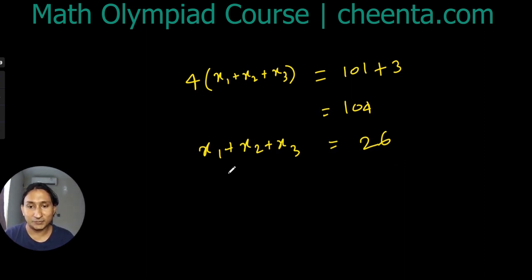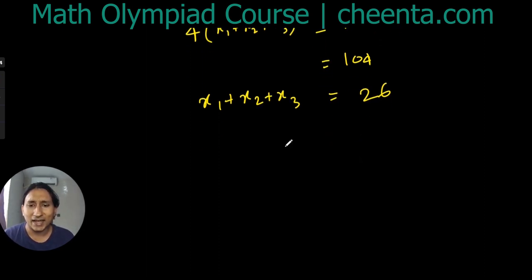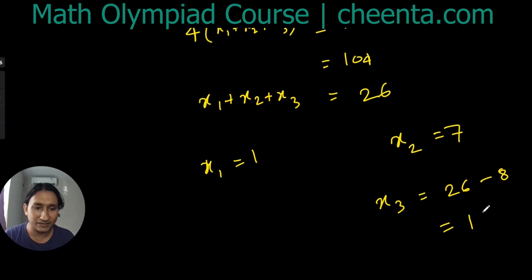So we need to find values of x₁, x₂, and x₃ that satisfy this. I think it would be a good idea to find x₁, x₂, and x₃ which are quite far apart so that the numbers do not overlap. So let's take x₁ = 1.